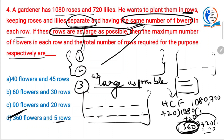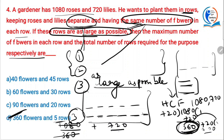Now what about the total number of rows? Divide 1080 roses by 360 — that gives 3 rows of roses. And 720 lilies divided by 360 gives 2 rows of lilies. Total number of rows is 5. You don't need to calculate this unless they ask for the number of rows specifically — otherwise, observe the options and mark.